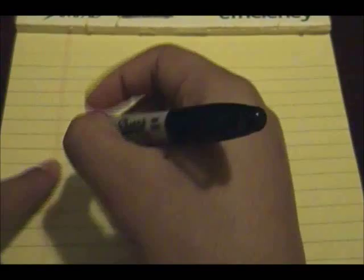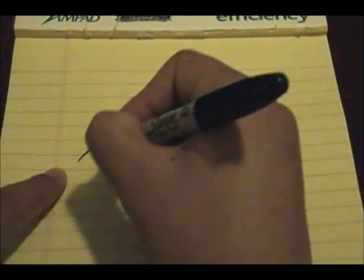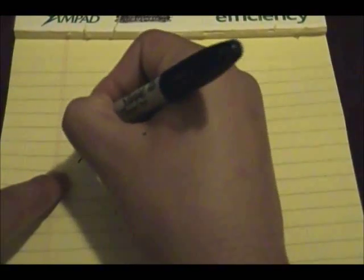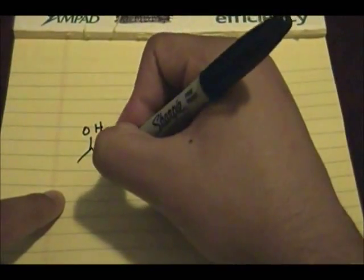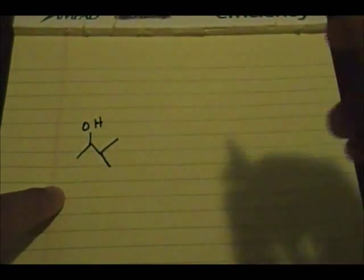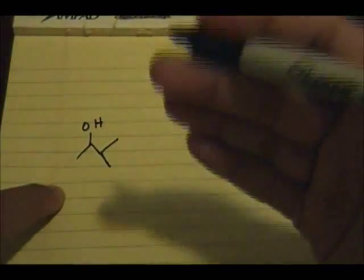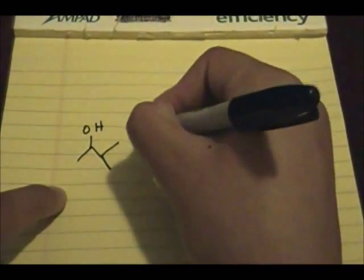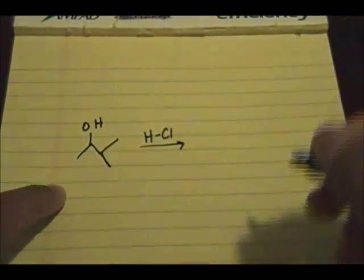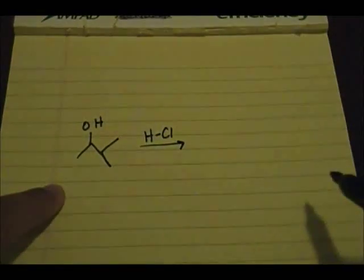One quick thing before moving on: regarding the first example — if you have a secondary alcohol and use HBr or HCl, it will follow an SN1 reaction. The thing I forgot to mention is that you need to watch out for rearrangements. If you're using HCl, you're not going to form the alkyl halide in the original position; you're going to form it in a different position.